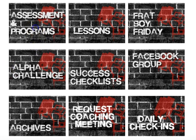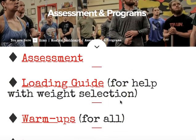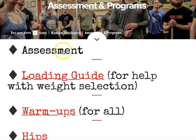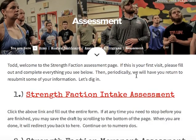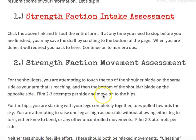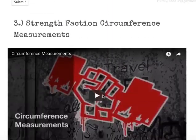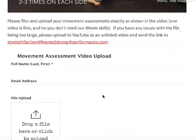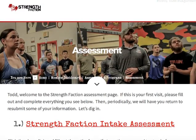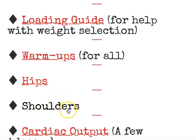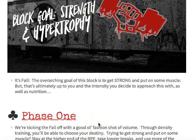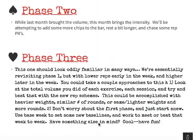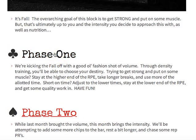Let's start with the assessment and programs to give you an example. When you come in, the first thing you're going to do is submit your Strength Faction assessment. You're going to do your questionnaire, your movement assessment, circumference measurements if you want to, and pictures. All of this culminates into us making a decision about which training group you're going to be in — either the hips group or the shoulders group. You'll have four different phases over the 16 weeks.